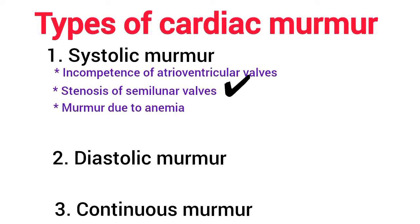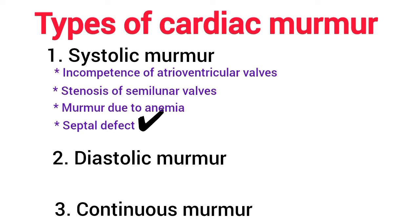Number three is murmur due to severe anemia. A systolic murmur is heard in severe anemia because of reduced viscosity and accelerated blood flow. Number four is septal defects. During interventricular septal defects, blood flows from the left ventricle to the right ventricle during systole, producing a systolic murmur.